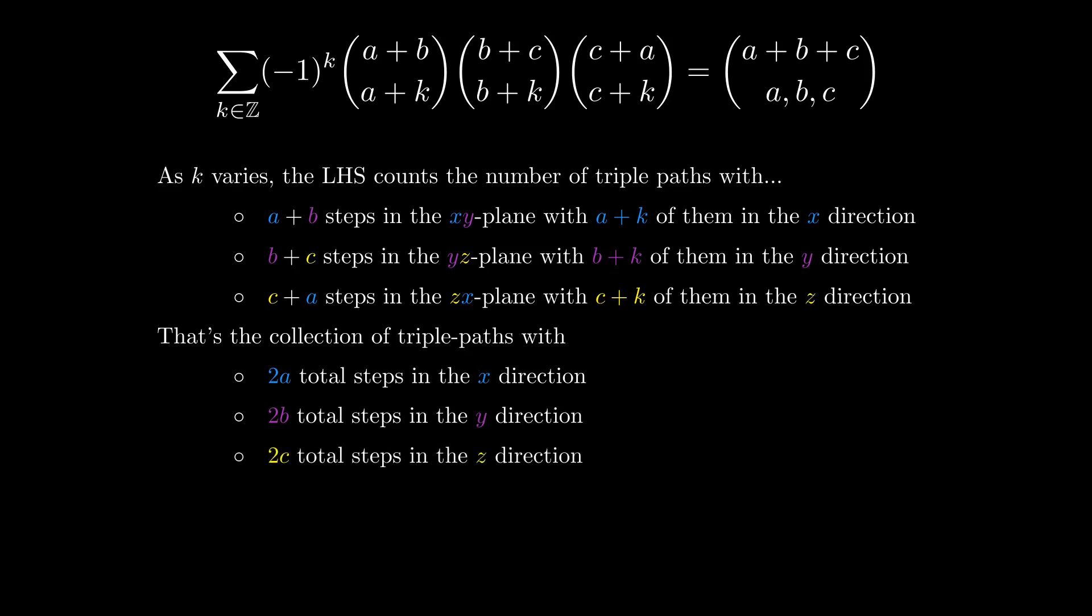That's what's counted by the left-hand side without the (-1)^k. So what does the parity mean? Well, when k is zero, we split our a x steps evenly between the xy and zx planes. When it's positive, we have more x steps in the xy plane, and when k is negative, there are more x steps in the zx plane than the xy plane. That means k is the number of excessive x steps we took in the xy plane, or how far we are from balancing our x steps in the two planes where it appears.